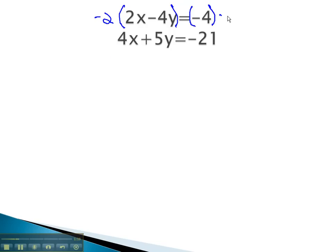Of course, it's important to remember to multiply by the negative 2 on both sides. The first equation is now negative 4x plus 8y equals positive 8. The second equation was unchanged. 4x plus 5y equals negative 21.